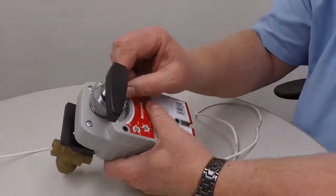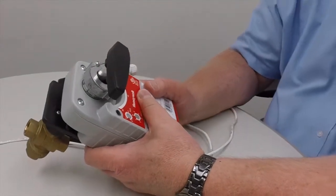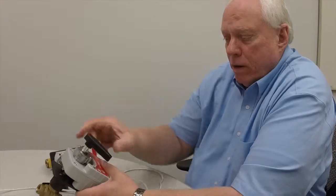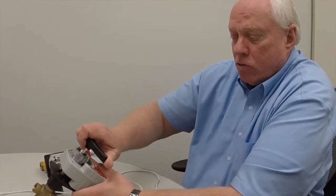After you have tightened down, then you would put the control system back into auto and the valve then will open or close or somewhere in between depending on the control signal.